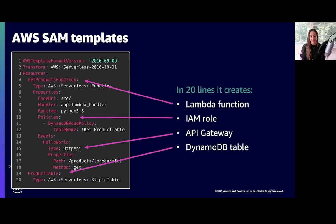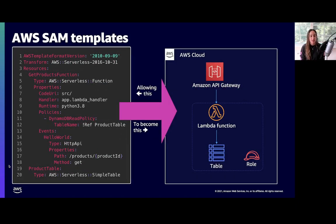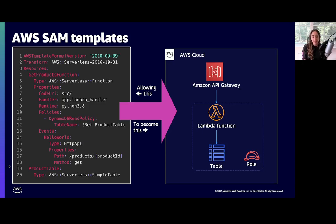We're also creating an API from API Gateway, so your event source for your Lambda function is this HTTP API. You can configure these templates to add any AWS resources and create your application — you have a lot of flexibility to build what you want. Think of this as like a shopping list of exactly what you need in your application and the configurations for each resource, all in one place. With these 20 lines of code, the template on the left becomes the architecture on the right: a Lambda function triggered by API Gateway, a DynamoDB table that stores the data, with permissions and policies already wired up automatically by SAM.